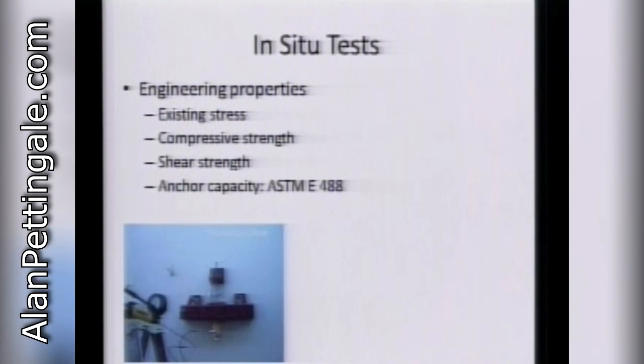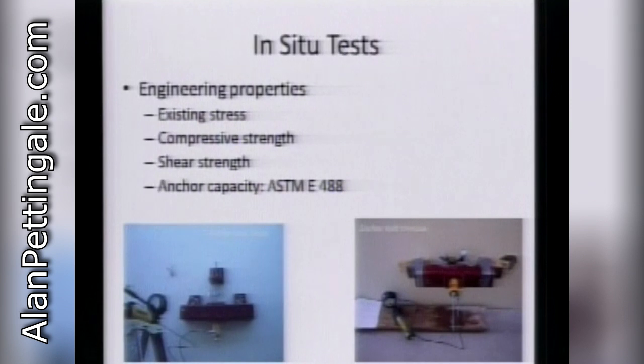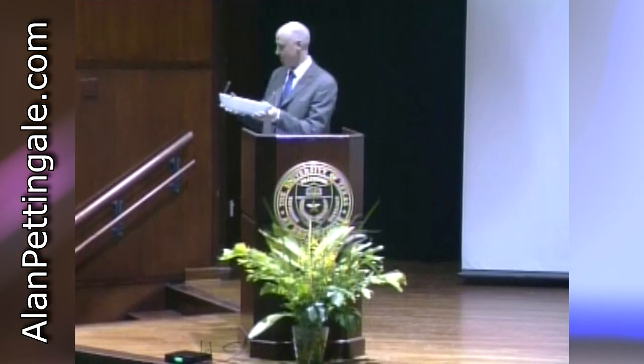In situ tests are where you're actually doing something in the sample. Mike's firm has flat jack equipment. You slip these inside a bed joint; there are primarily two tests. With two flat jacks, you can determine the compressive strength of masonry by testing the sample in the wall, or at least find its properties up to a certain stress level. Pressure inflates a diaphragm — the equipment is shaped somewhat like a calzone — and that pressurizes the joint.